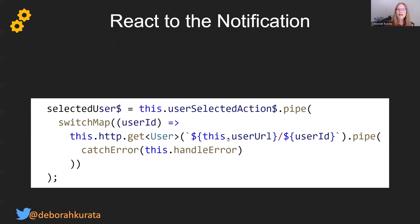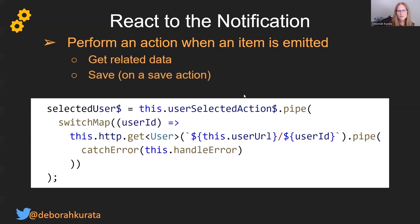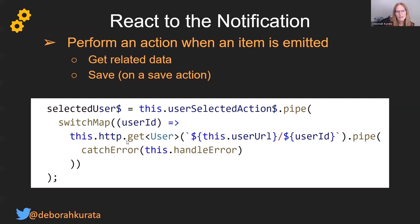Then we can react to that notification in any of our code that wants to react to it. In this case, we are going to get the user information. We can also use it to get related data or to save. Each time we select a different user, we pipe it through and switchMap on the user ID being emitted from that user-selected action observable, and then use it as a parameter in our HTTP GET. So we don't have to have a procedural approach in order to have parameters on our GETs.